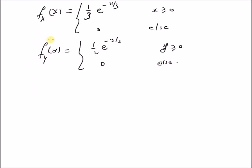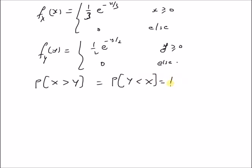Given these two marginal PDFs of X and Y, where X and Y are independent of each other, we want to calculate the probability of the inequality that X is greater than Y. This is also equal to the probability that Y is less than X, and it is also equal to 1 minus the probability that X is less than or equal to Y.